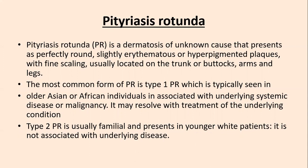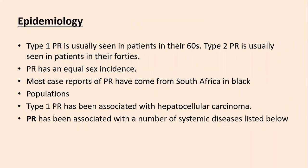Pityriasis rotunda is the fourth disease. It is a dermatosis of unknown cause presenting as perfectly round, slightly erythematous or mostly hyperpigmented plaques with fine scaling, usually located on trunk, buttocks, arms, and legs. The most common form is type 1, typically seen in older Asian or African individuals and associated with underlying systemic disease or malignancy; it resolves with treatment of the underlying condition. Type 2 is usually familial and presents in young white patients without an underlying disease. Type 1 pityriasis rotunda is usually seen in patients in their 60s; type 2 in patients in their 40s.